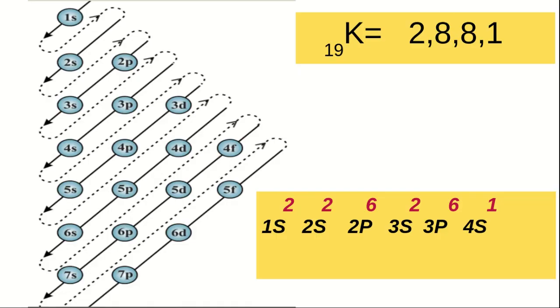This figure shows the increasing order of energy of various subshells. The energy of 4S is less than 3D. The last one electron of potassium ends in the N-shell after the M-shell is occupied with 8 electrons.